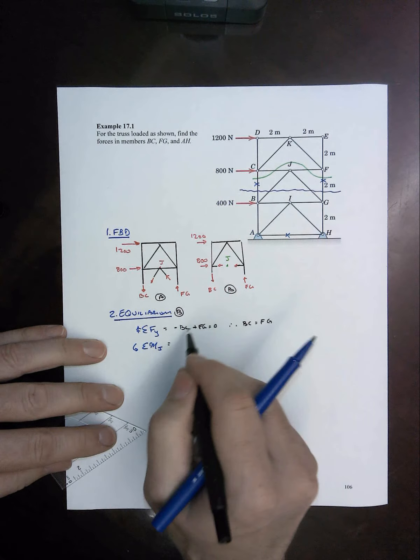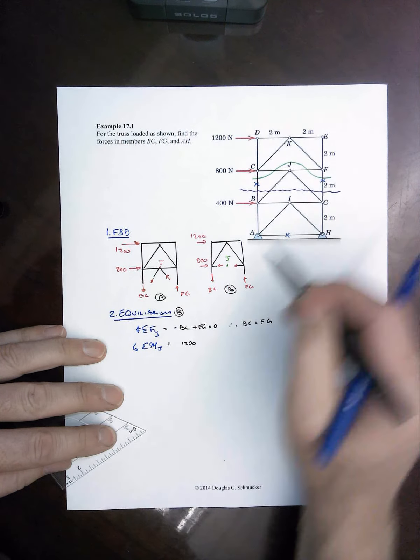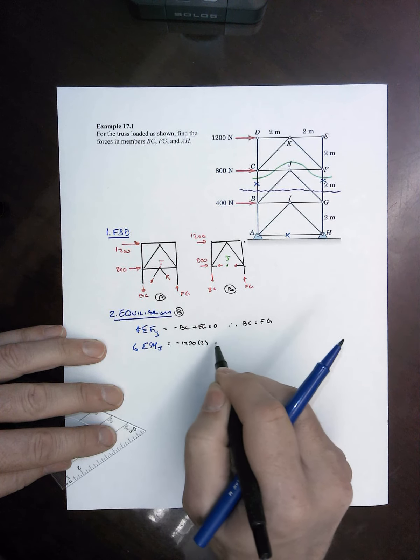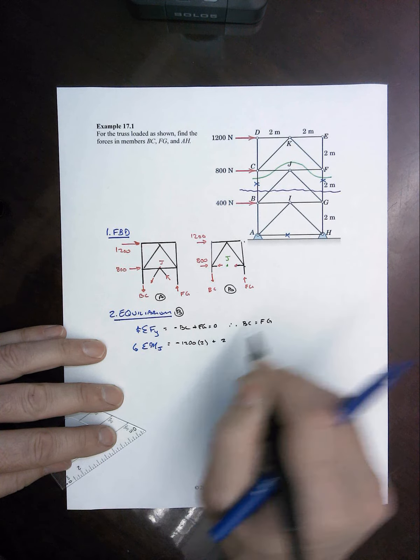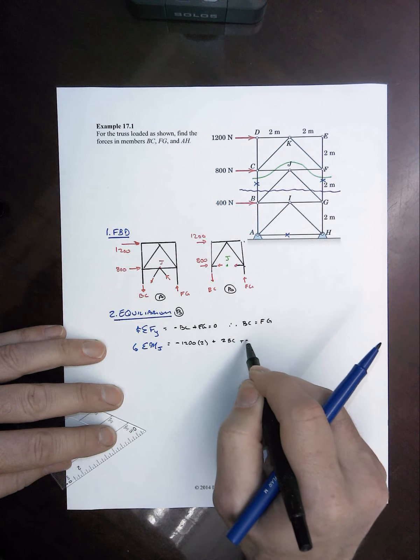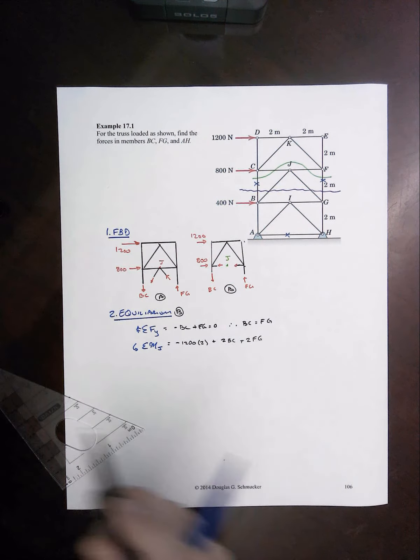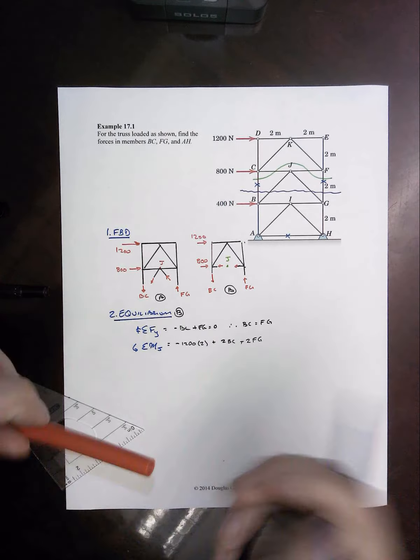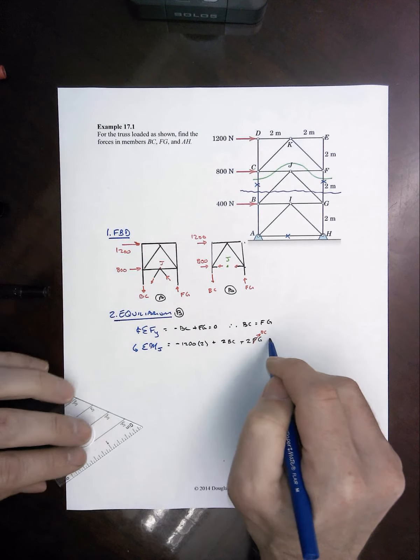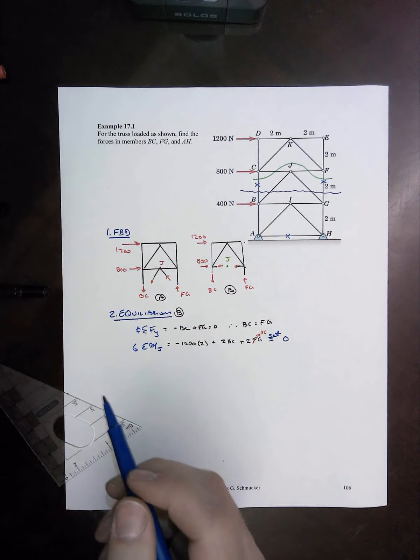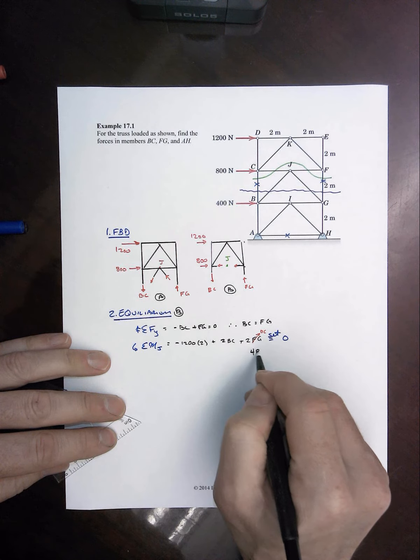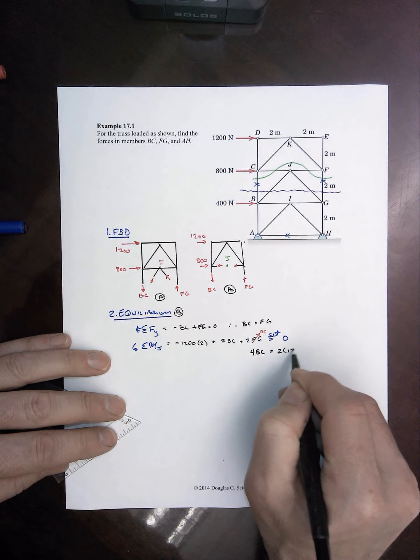We've got 1,200 with a moment arm of 2 meters going clockwise. And then we have BC going the other way. It's at also 2 meters away from J, perpendicular-wise. And plus, the 2 times FG is also the 2 meters. And yes, it turns out that FG is the same as BC. And we set that equal to 0, and we get good stuff here.